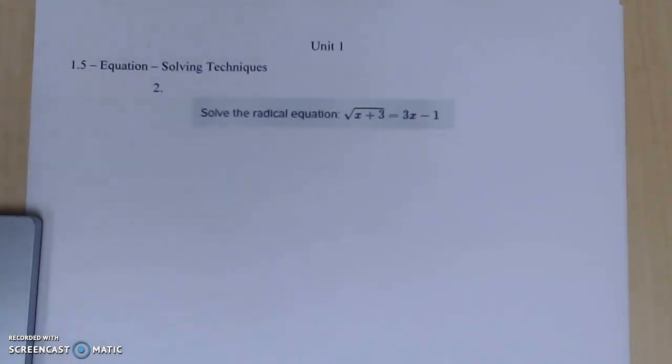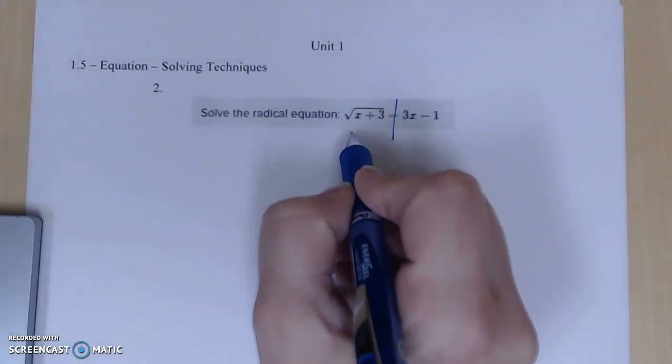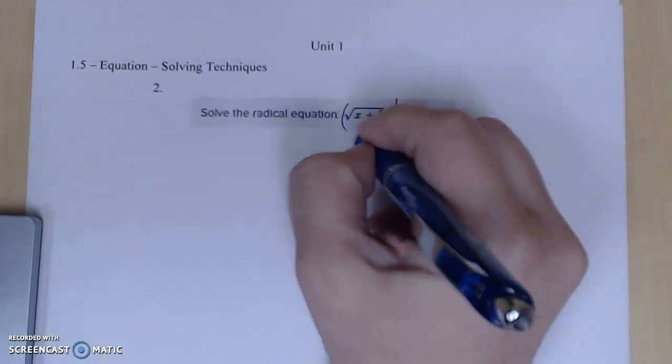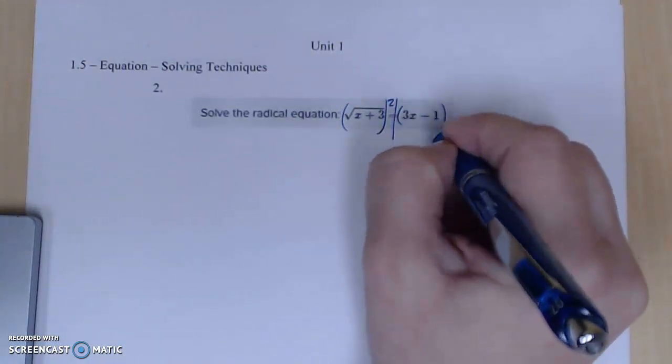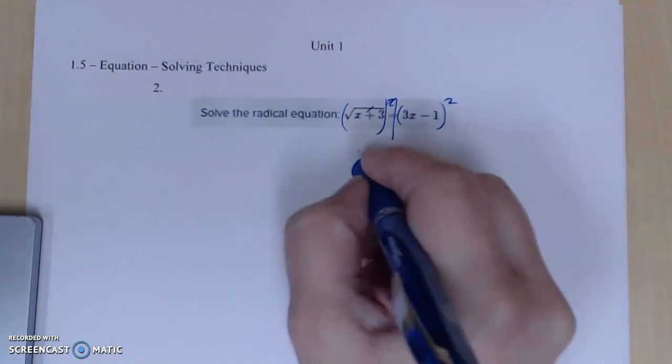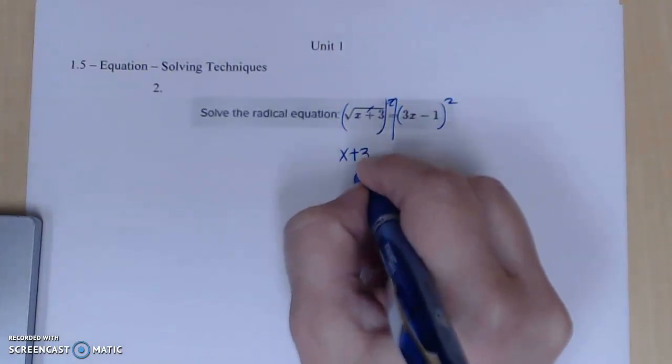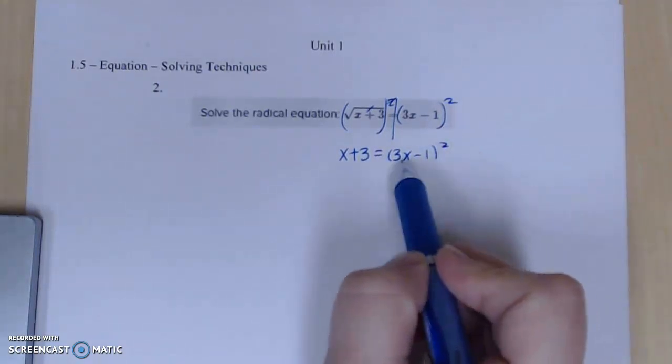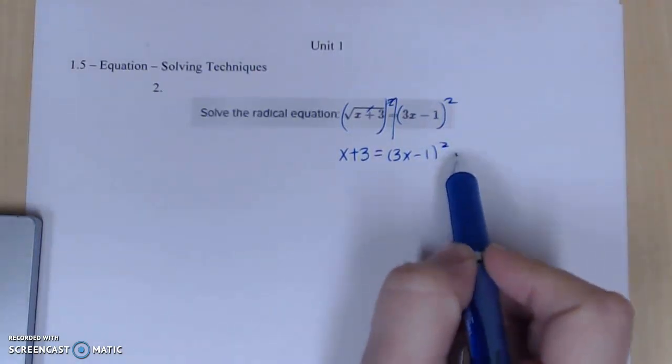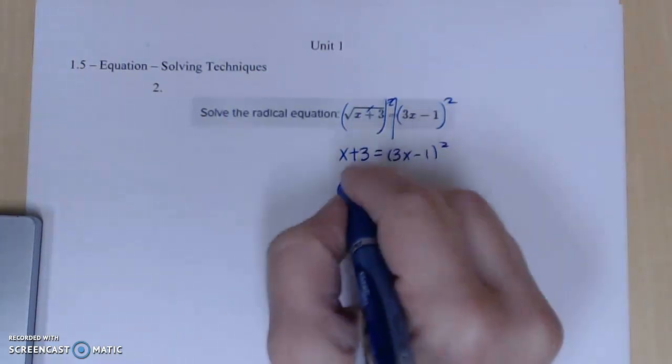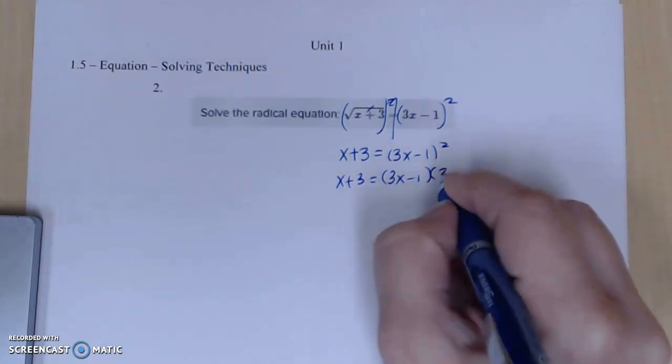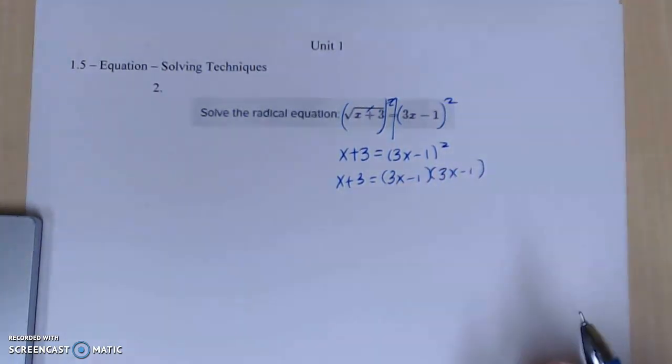So again, the first thing you want to do is you want to isolate your radicals. So you'll notice my radical is all beside itself on this left-hand side. Everything without the radical is on the right-hand side. So I'm first going to square both sides completely to eliminate the radical. So this gives me x + 3 equal to (3x - 1)². Now be careful not to shortcut this because many students will shortcut and they are not mathematically correct. This is equal to, when you square something, it's something times itself that many times.